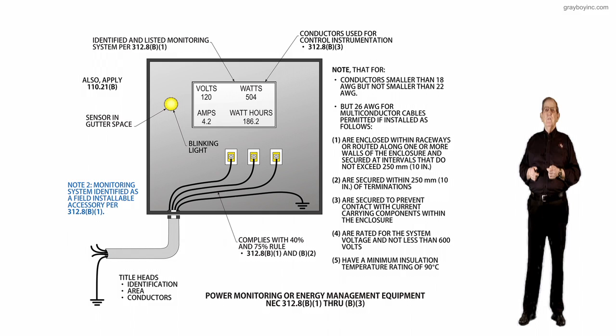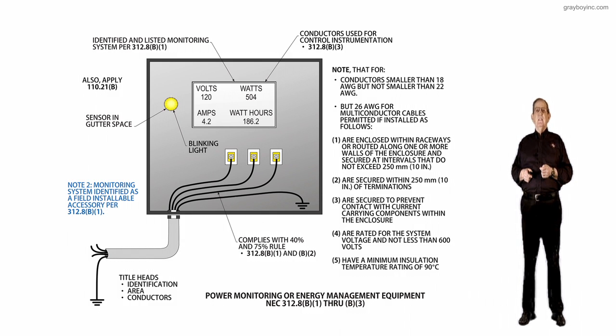If you had any splashes at all, it would be 75% of the splashing area only in accordance with 312.8 B1 and B2. You'd have to have title heads that identify the identification, the area of the conductors, and so forth.